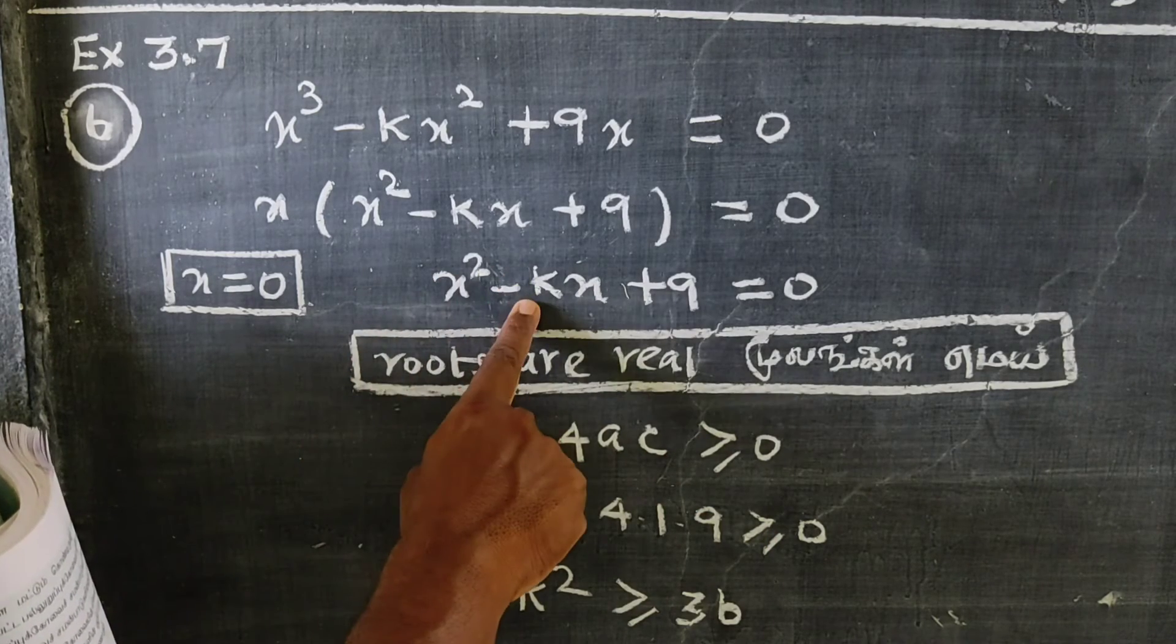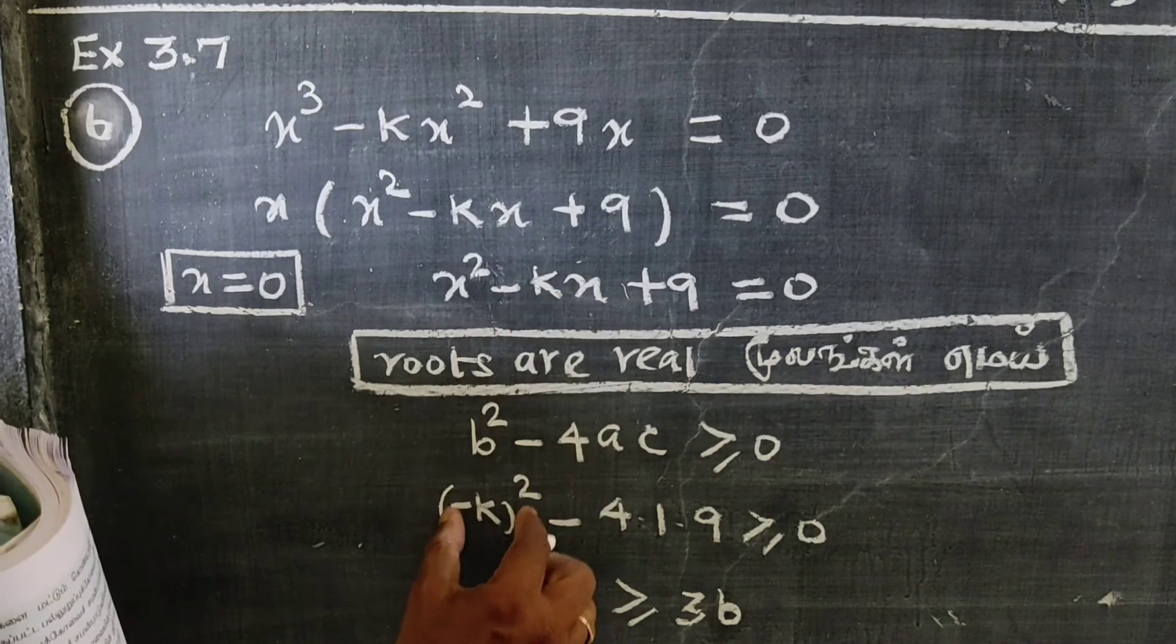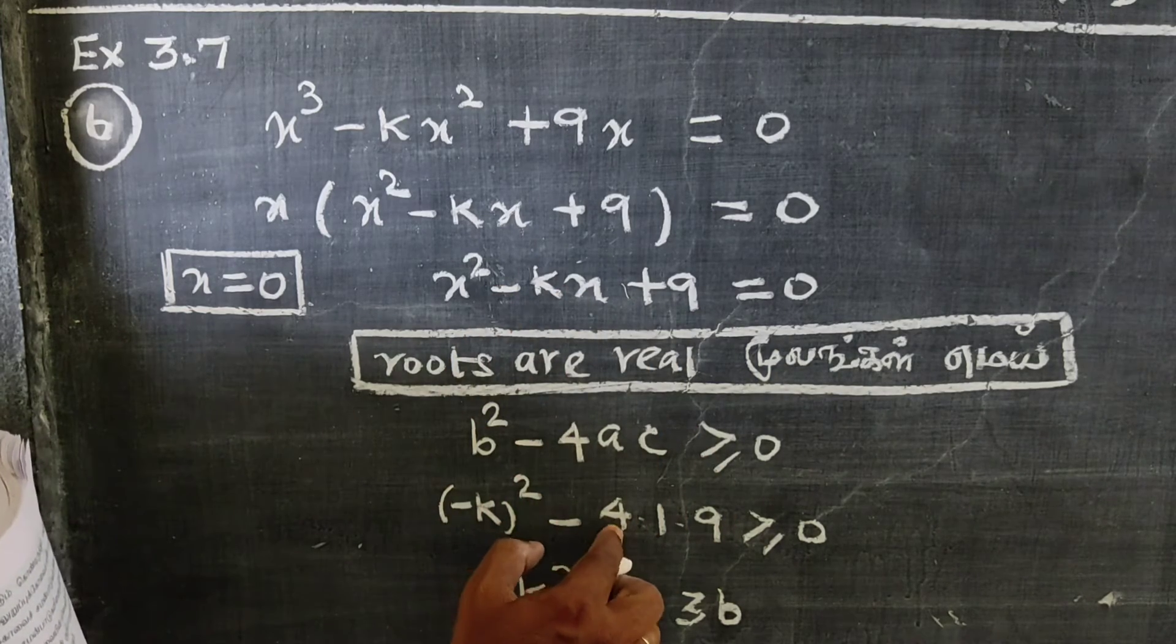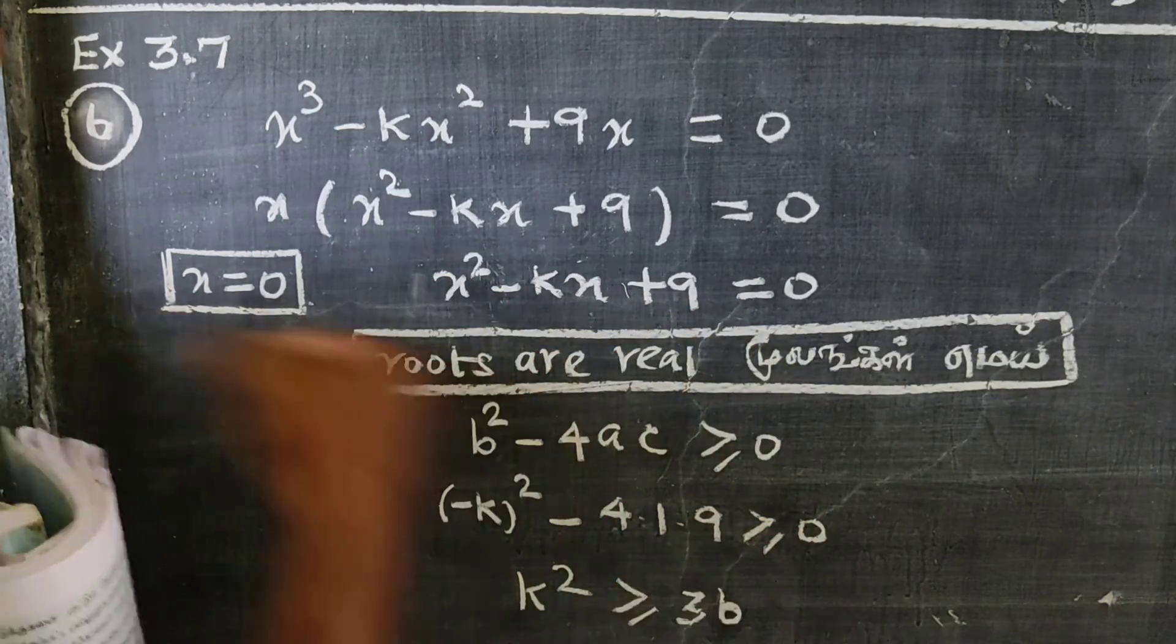For the equation x² - kx + 9 = 0, the discriminant b² - 4ac must be greater than or equal to 0.